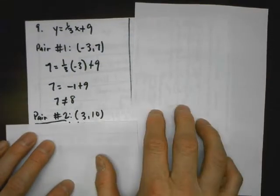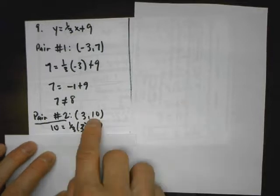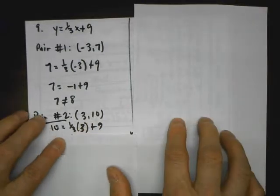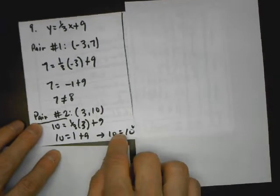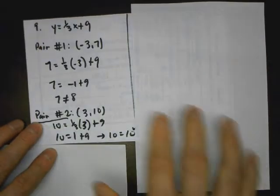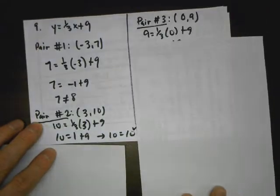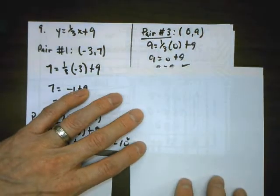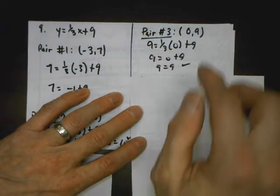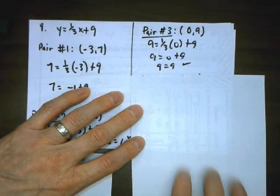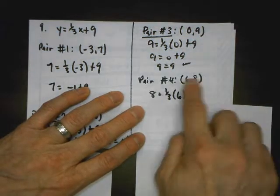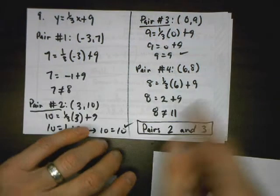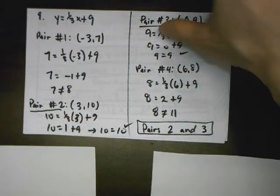Pair 2: (3, 10). I plug 10 in for y and 3 for x. 1/3 of 3 is 1; 1 plus 9 is 10. That worked — it's on the line. Third point: put the y where y goes and x where x goes. 0 times anything is 0 — that checked out, it's on the line. Number 4: 1/3 of 6 is 2 — that doesn't check out. So only pairs 2 and 3 worked.